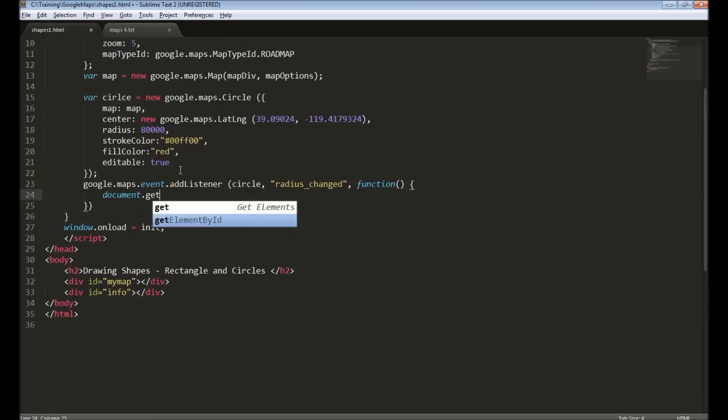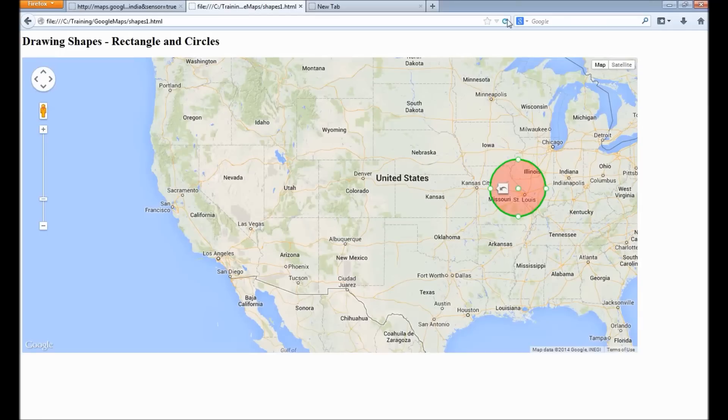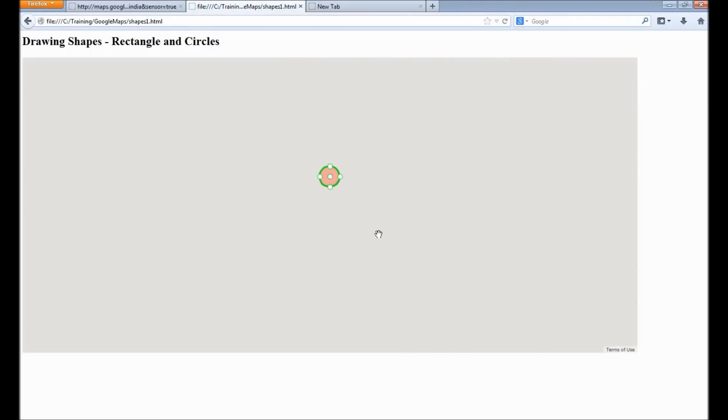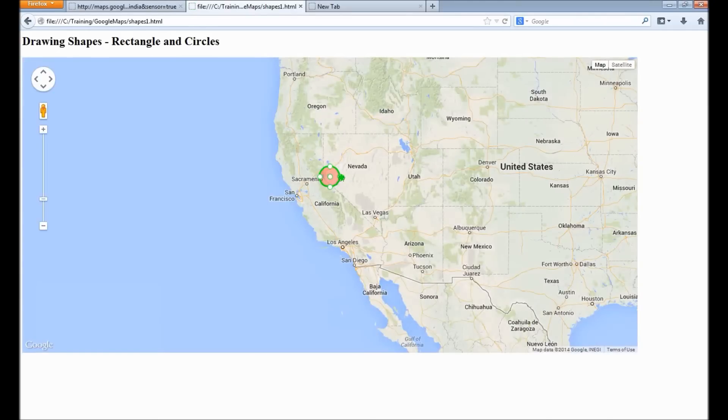Here you can use radius new information. I will display it in the info div. It's circle.getRadius. So when I reload and when I resize my circle...